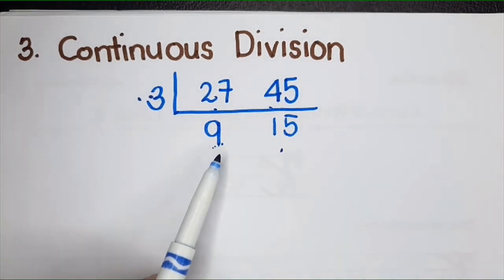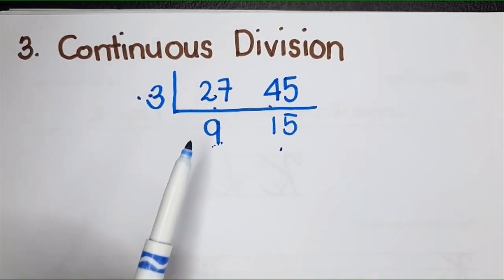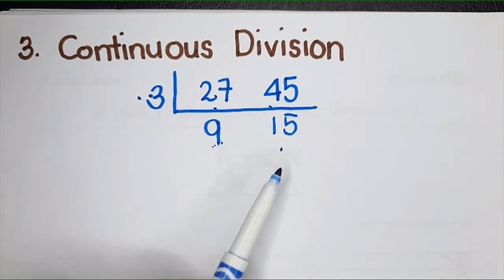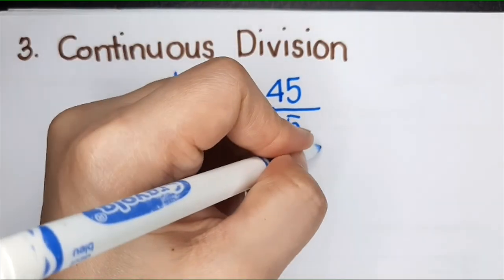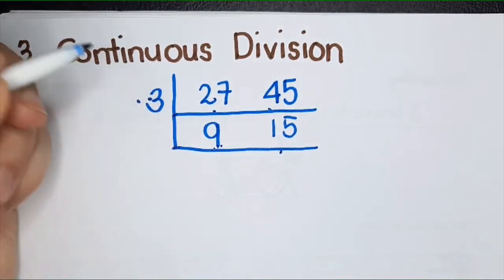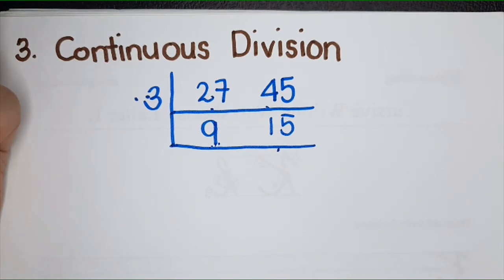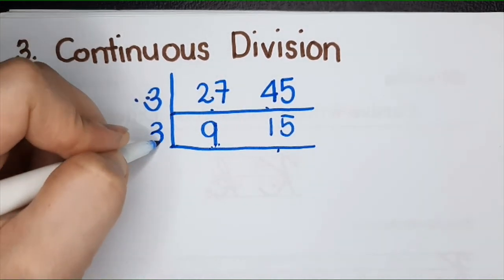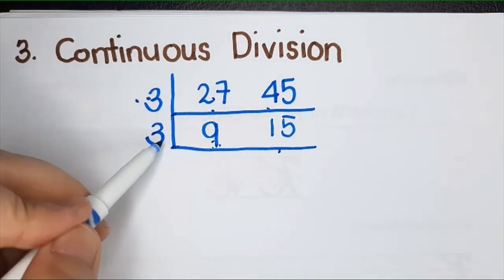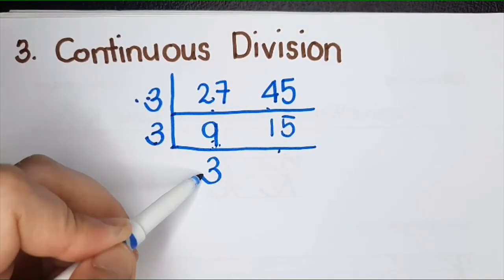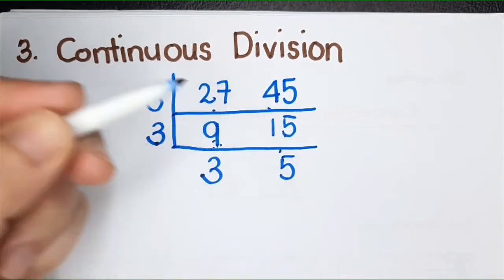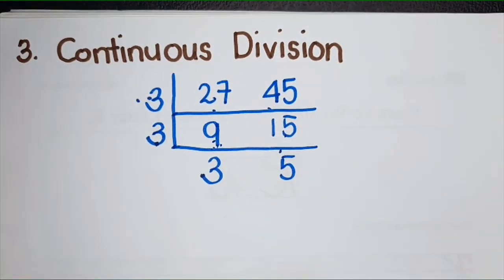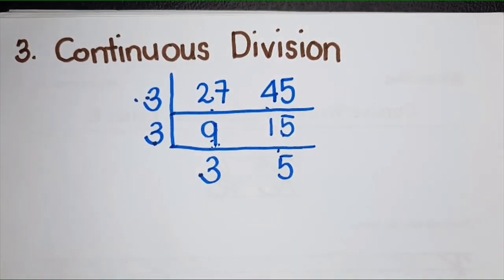Can you still think of a number that can divide both 9 and 15? Yes, 3. You can continue dividing. You write 3 here. 9 divided by 3 is 3. 15 divided by 3, you get 5. I think nothing can divide both 3 and 5, so you stop dividing.